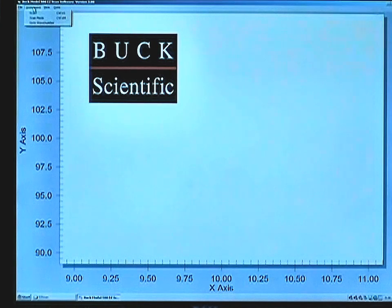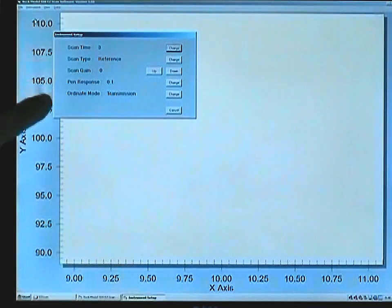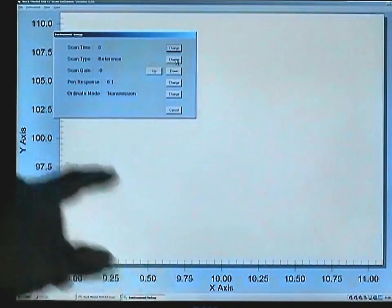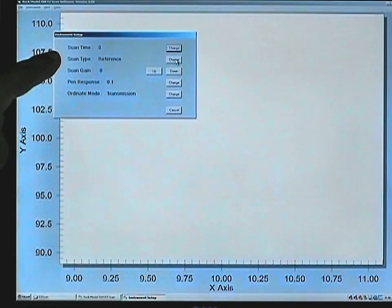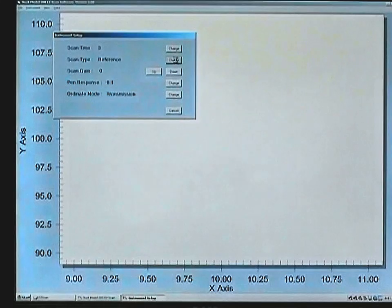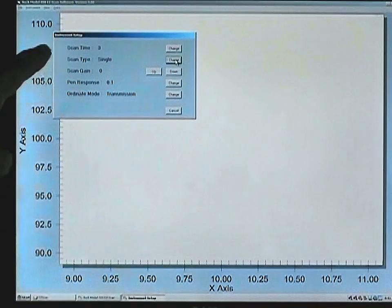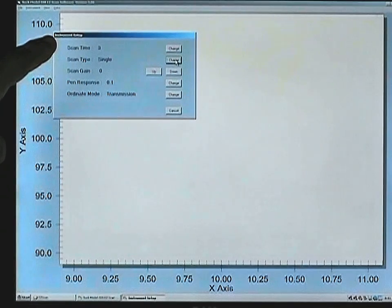You can go to Instrument, Scan Mode, and here's where you can change the parameters for the setup of the instrument. It is recommended to change the scan type from the default reference, click on Change, and set that for the single beam mode. Scan time of 3 is the usual default.